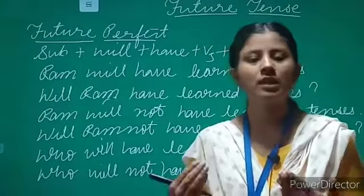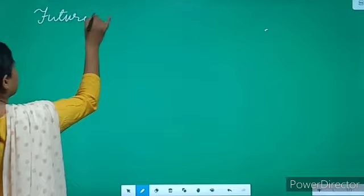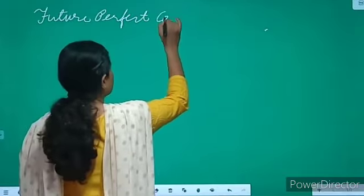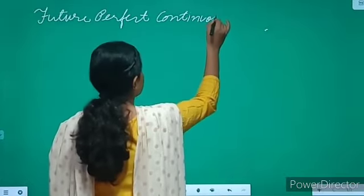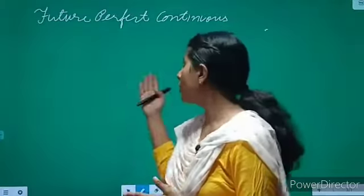What is future perfect continuous tense? We use future perfect continuous tense for all the actions which will be continuing in the future till some point. We use it for all the actions which will be starting in the future and also will be continuing.